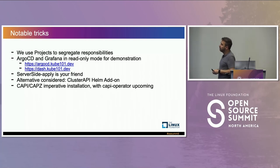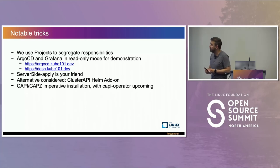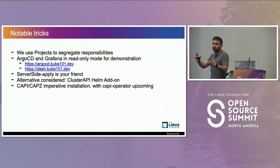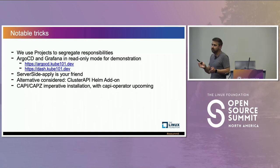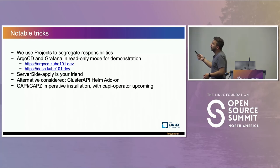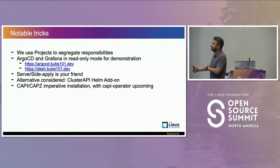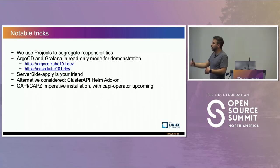Cluster API has their own add-on that lets you deploy Helm charts, but we decided not to use that — we wanted to keep things simple and use Argo instead. As I mentioned, we installed Cluster API manually on the management cluster. There's something called the Cappy operator that claims to do this better for GitOps-based Cluster API installation, but we had some trouble with it. Hopefully in the near future it will be easier to use.